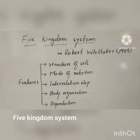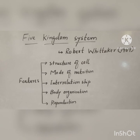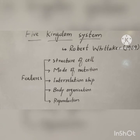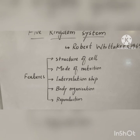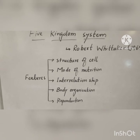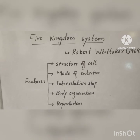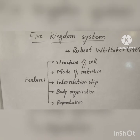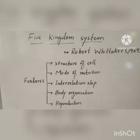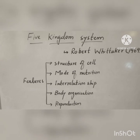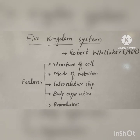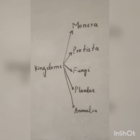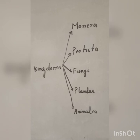The Five Kingdom System was classified by Robert Whittaker in 1969. The basic features used for classification are the structure of the cell, mode of nutrition, interrelationship among organisms, body organization, and mode of reproduction. The Five Kingdom System includes Kingdom Monera, Kingdom Protista, Kingdom Fungi, Kingdom Plantae, and Kingdom Animalia.